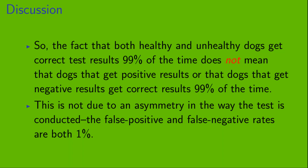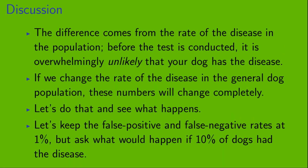The fact that both healthy and unhealthy dogs get correct test results 99% of the time does not mean that dogs getting positive or negative results are correct 99% of the time. This is not due to an asymmetry in the test — the false positive and false negative rates are both 1%. The difference comes from the rate of the disease in the population. Before the test, it is overwhelmingly unlikely that your dog has the disease. If we change the disease rate in the general dog population, these numbers will change completely.